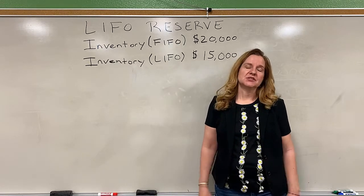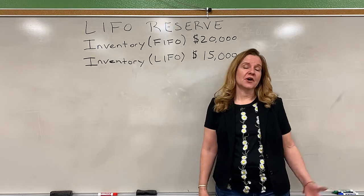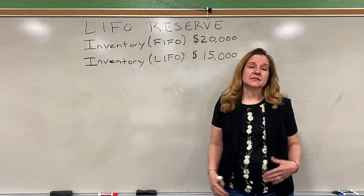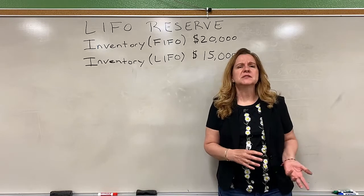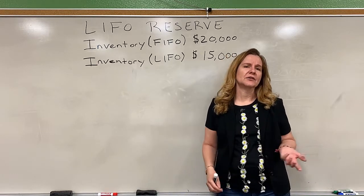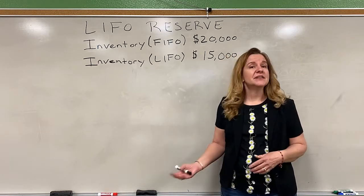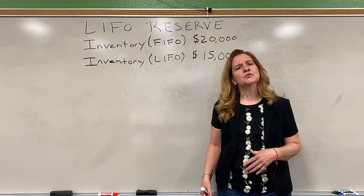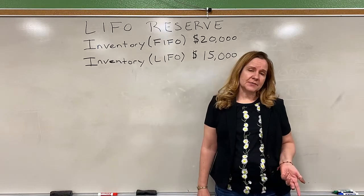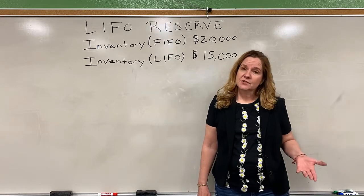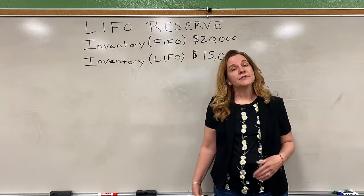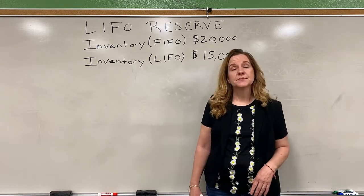Sometimes companies use FIFO for their internal reporting. They may do this because they have bonuses based on net income, and FIFO typically reports a higher net income than does LIFO. But for external reporting they want to use LIFO. So we have something called LIFO reserve. The LIFO reserve is a contra account that we use to record and then disclose in the financial reports.